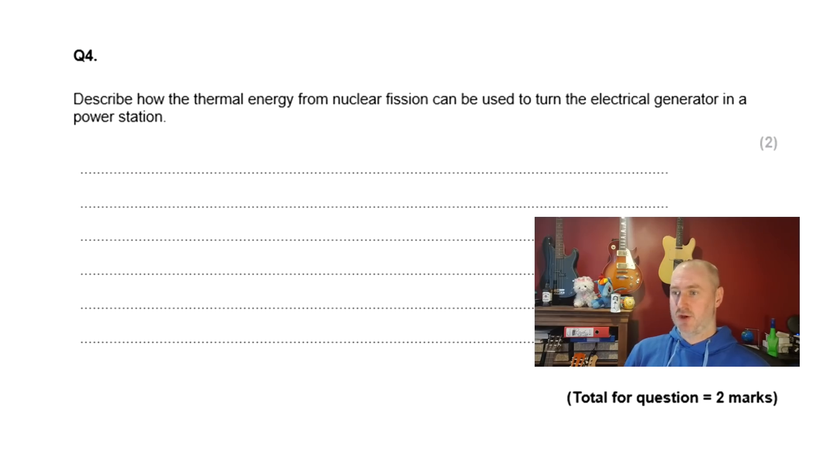Right, a nice easy one to finish. Describe how thermal energy from nuclear fission can be used to turn the electrical generator in a power station. Pause it now. On the surface of it, because this question mentions nuclear fission, you might be forgiven for thinking it's a little bit harder than it actually is. But actually it's talking about the thermal energy or the heat produced from nuclear fission. Nuclear fission itself is irrelevant. Just how does the heat lead to turning the generator? It's the same in all power stations, whether we're burning coal, oil or gas. Essentially the heat is used to boil water into steam, and the steam turns a turbine. And they are your two marks: one mark for mentioning steam, one mark for mentioning turns turbine.